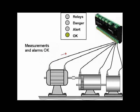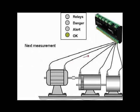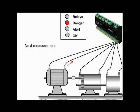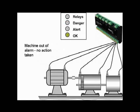Relays can be configured to activate audible alarms, warning lights, and even machine shutdowns when a particular alarm state is triggered. You can now specify how long an alarm state must persist before a relay is activated. A time delay period can be applied to any relay so that if a machine comes out of its alarm state during this time, the relay will not activate. This will help ensure that your monitoring system does not trigger a machine shutdown or alarm alert because of a single abnormal measurement.